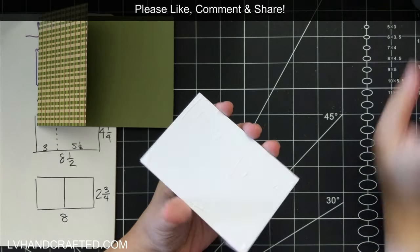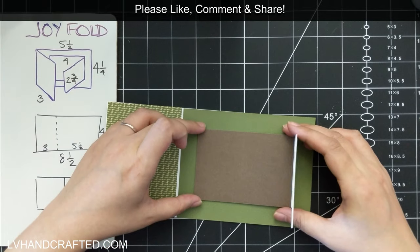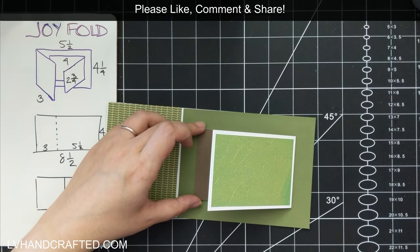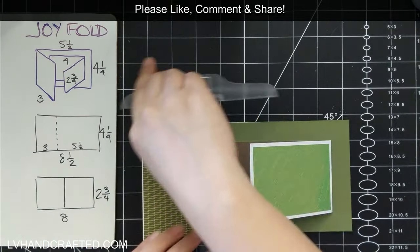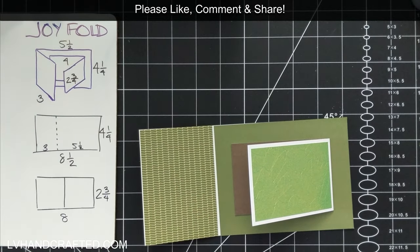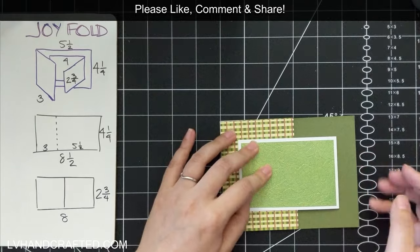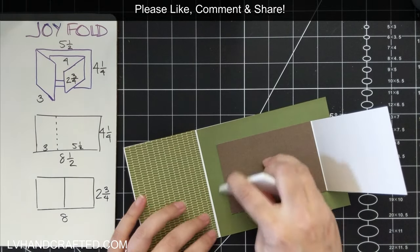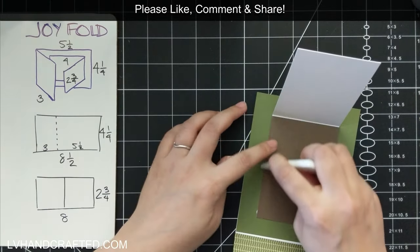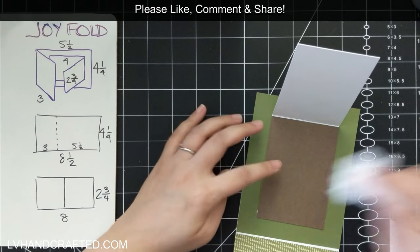And this panel here, this is the back of that brown section. This is what will get glued down to the inside of your card. And I'm just eyeballing, trying to keep a consistent margin around all four edges.